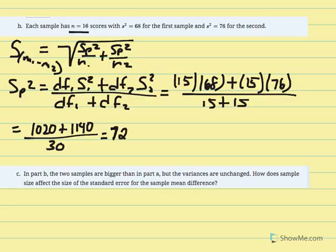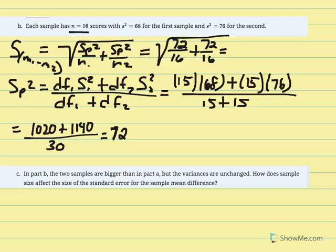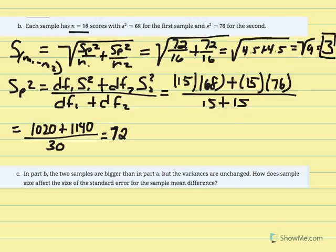The estimated standard error of the mean difference given sample size of 16 is now equal to 3, compared to 6 when sample size was 4.